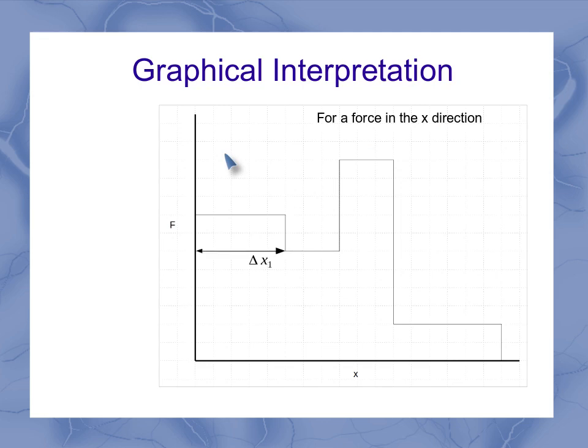So for example, for my first segment, my delta x is the width of that segment. The force is the height of that segment. And the work is the force times the displacement. Again, I have a cosine of 0 degrees which becomes 1. Well, this force times the displacement is also the area of this rectangle. So the work done during the first segment is the area of the rectangle on the curve.